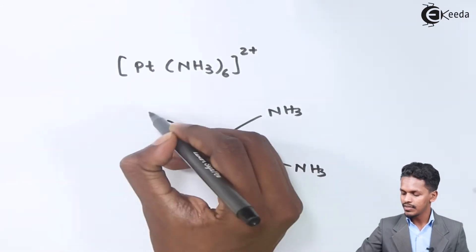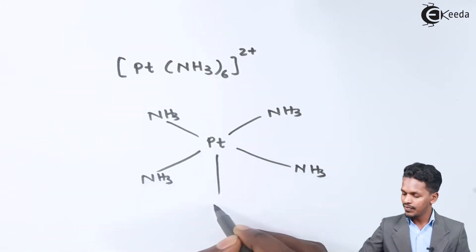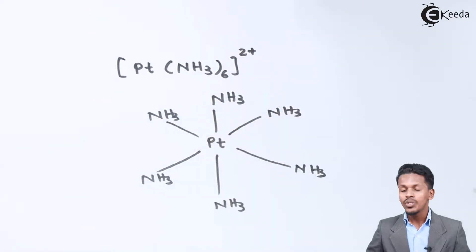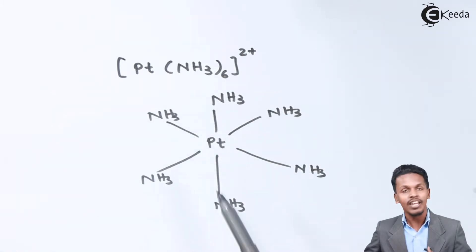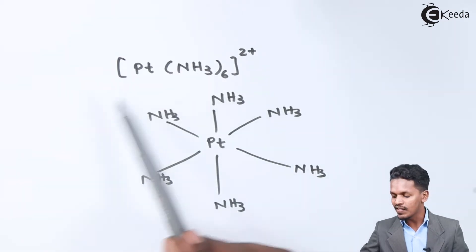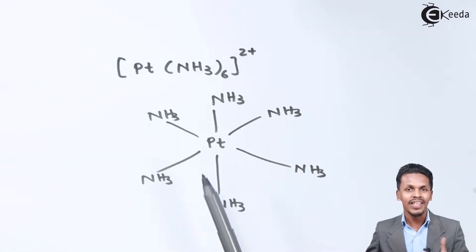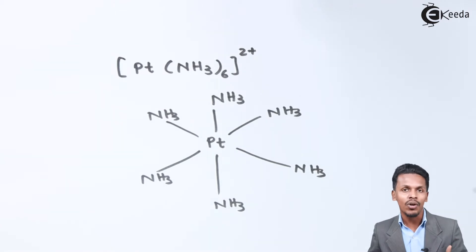The six amine groups are numbered one through six surrounding the central metal atom. The geometry is also different, and we will talk about that in future lectures. All these groups surrounding the central metal atom are why this compound overall is known as a complex, or a coordination compound.